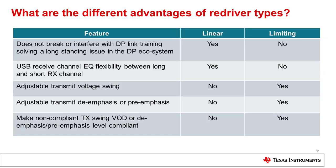The DisplayPort link training is used to compensate for the signal integrity between the DP source and the DP sink. Compensation is done by changing the DP source amplitude and pre-emphasis level as requested by the sink. One advantage of using a linear re-driver, with its ability to preserve the source's amplitude and pre-emphasis, is that the entire channel — from the source, the linear re-driver, and the sink — is included in the link training. So the linear re-driver does not interfere with the DisplayPort link training.